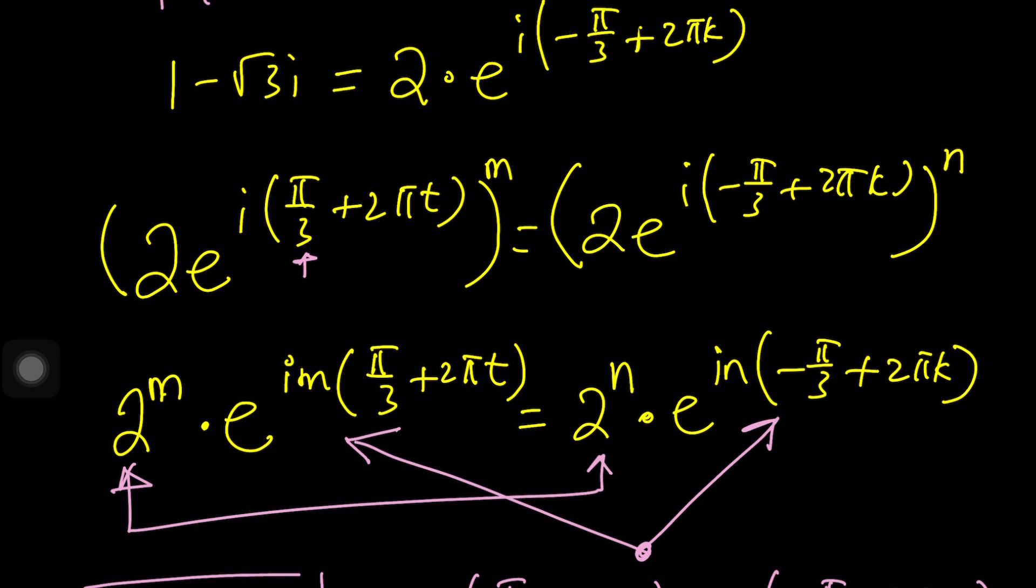But on the right hand side you're going to be getting a -3 or -π which is going to give you a negative number. So you need to make sure m and n are both even so that the negative can be taken care of.